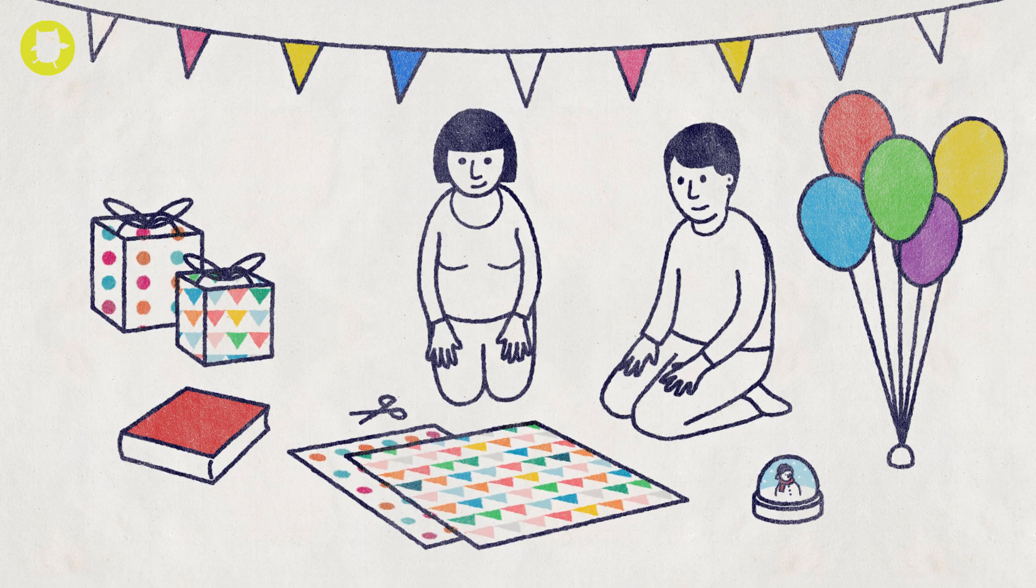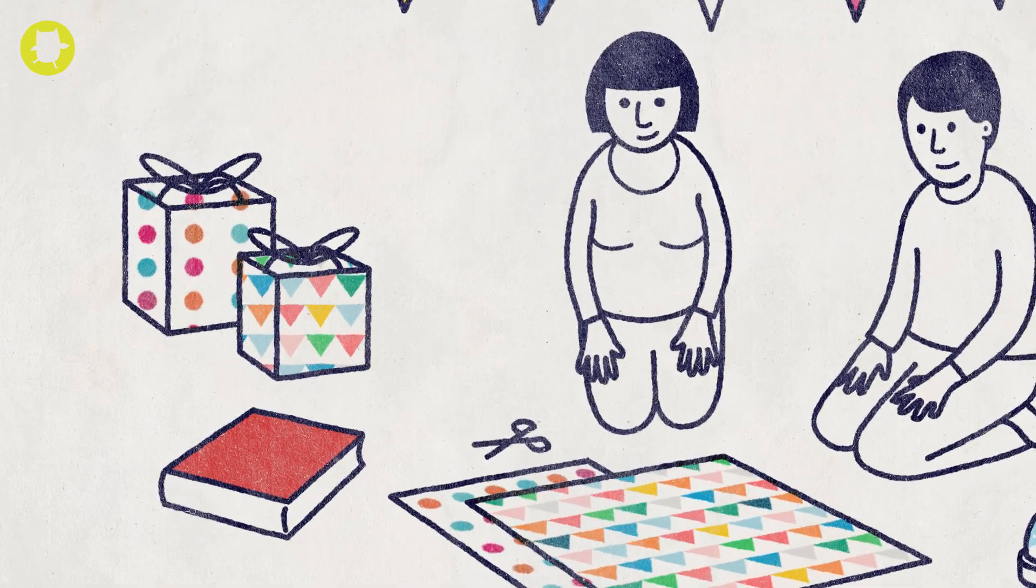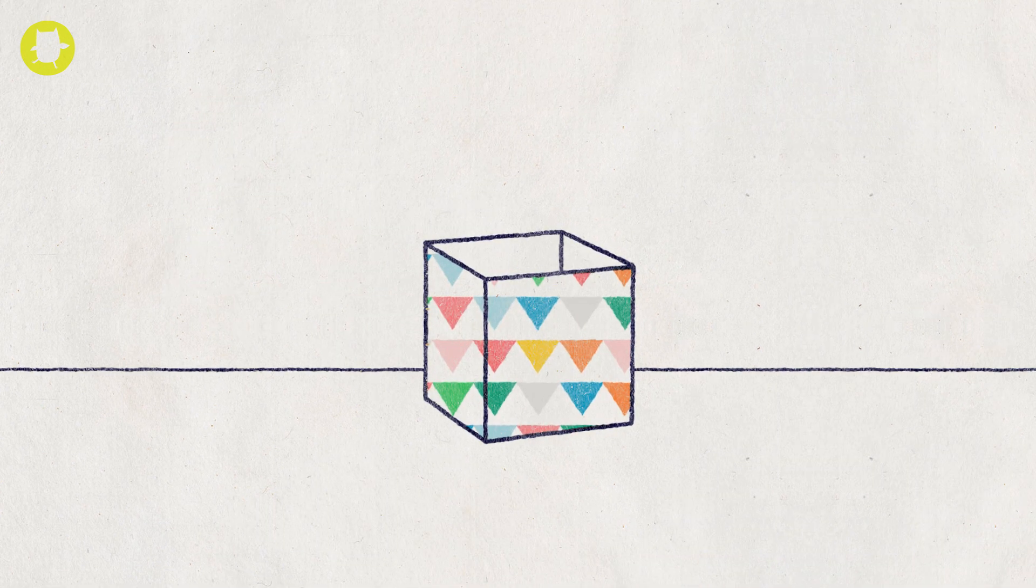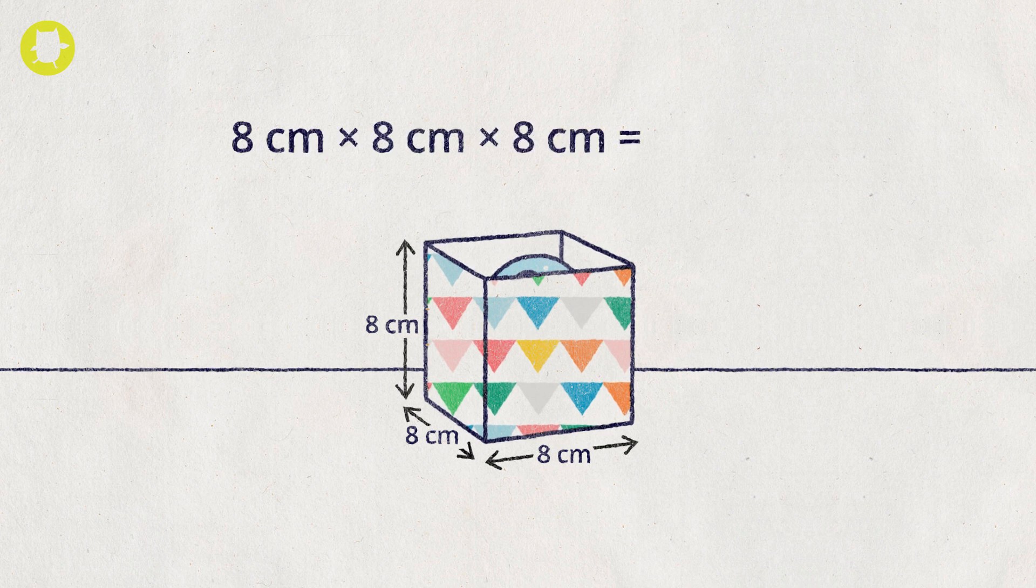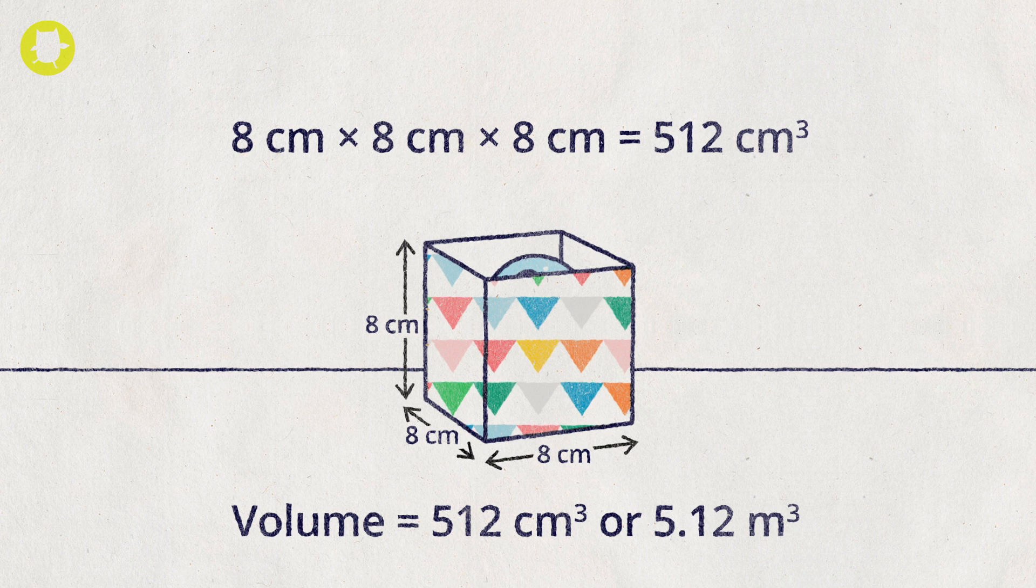Capacity refers to the amount a container can hold. Volume is the amount of space taken up by a solid shape. When measuring volume, cubic units such as cubic centimeters and cubic meters are used.